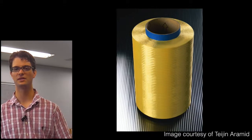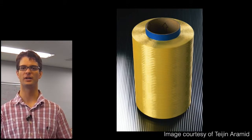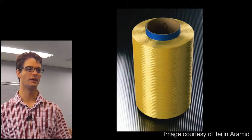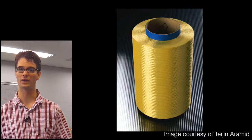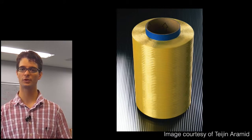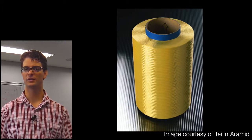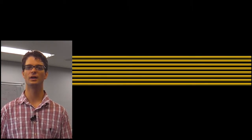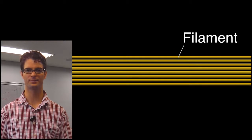The fiber in question is this aramid fiber supplied to us by Tejan Aramid. It is a fiber which is very strong and very light, and it doesn't elongate very much when you put load on it. It very much looks like the mechanical properties of this fiber are dictated by the nanostructure inside the filaments.